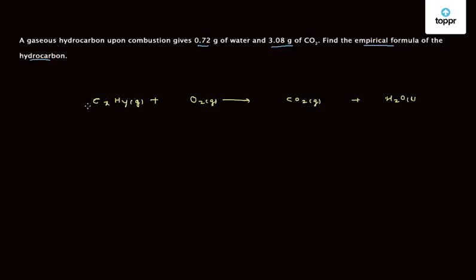On the left hand side we have X atoms of carbon, therefore here it will be X. We have Y atoms of hydrogen, so here there will be Y by 2. Now the number of oxygen will be 2 times X plus Y by 2.